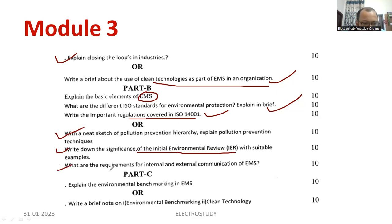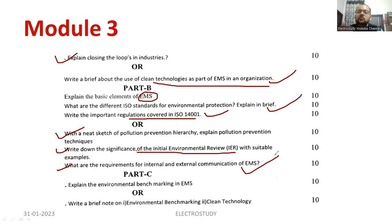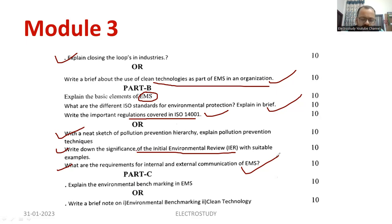What are the requirements of initial and external communication? Every management process requires communication. You have to explain external communication — communication with stakeholders. Internal communication means communication among the employees. If a company wants to conduct an environmental activity, there should be internal communication. External communication includes communication with stakeholders like customers, vendors, suppliers, and whoever is related to that particular transaction. Internal stakeholders are inside the company itself.